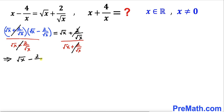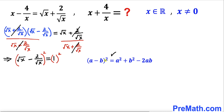After cancellation, we get (√x minus 2/√x) equals 1. Since we are interested in finding x plus 4 over x, let's square both sides. Applying the identity (a minus b)² on the left hand side gives (√x)² plus (2/√x)² minus 2 times √x times (2/√x) equals 1 squared, which is 1.